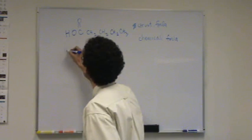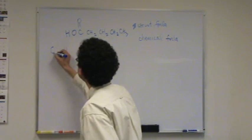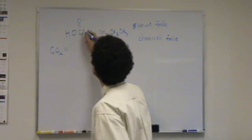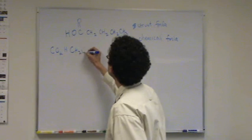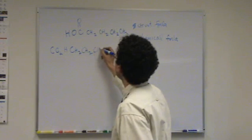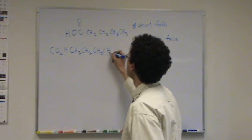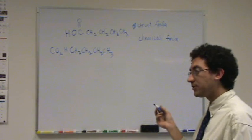so there's a couple ways you could do this. The easiest way would be just to do this: C-O2-H, CH2, CH2, CH2, CH3. That'd be the really simple way to do it if you wanted to.